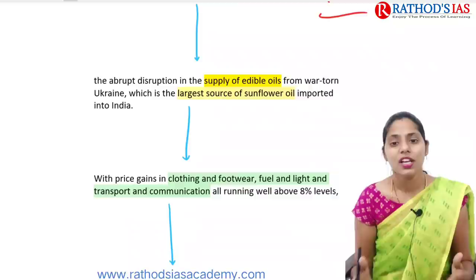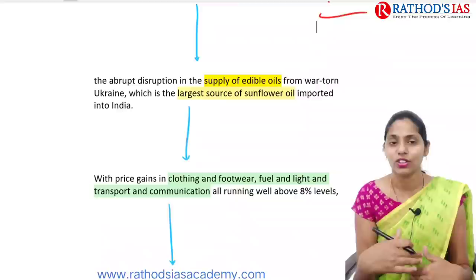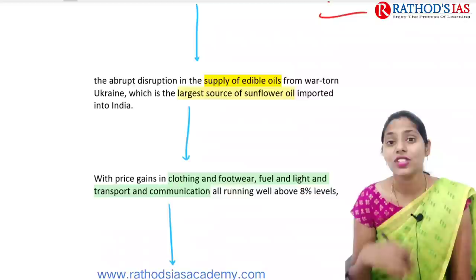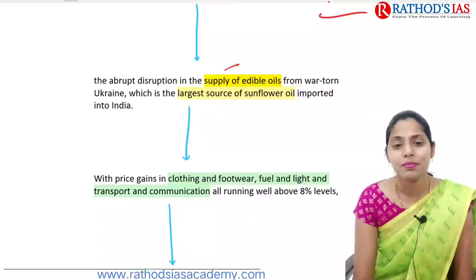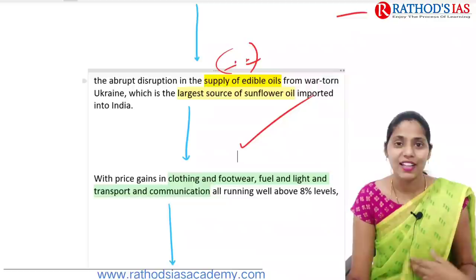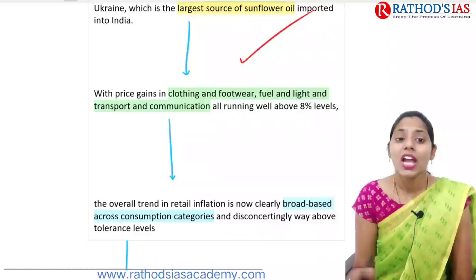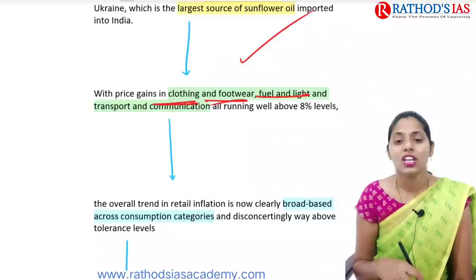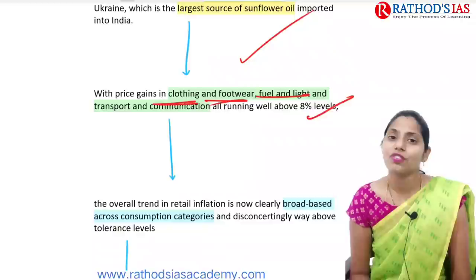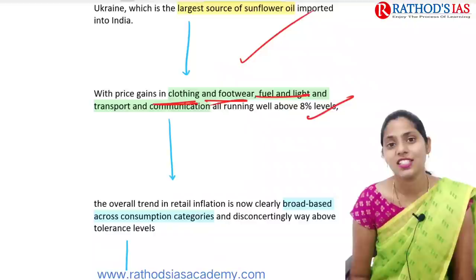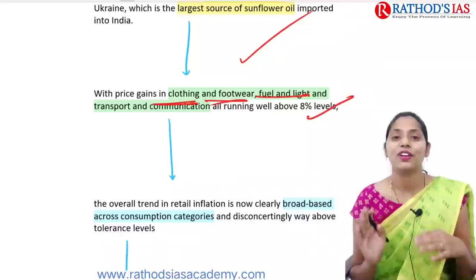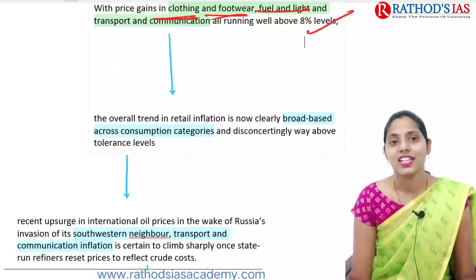Regarding edible oils, India normally imports sunflower oil from Ukraine. Because of the Russia-Ukraine crisis, there is disruption of the supply chain of sunflower oil, which will have a negative impact and may cause a rise in its prices. Clothing, footwear, fuel, transportation, and communication are all running well above 8% levels. Recently, footwear was added to the 18% GST slab, adding to costs.